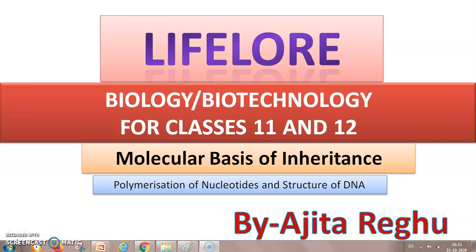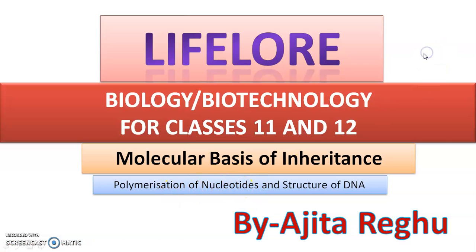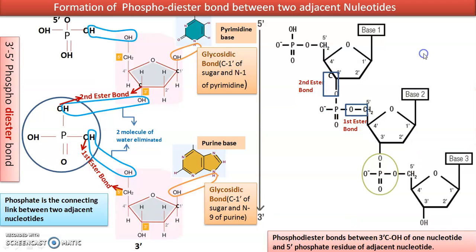Welcome back students. We will continue with nucleic acid. We discussed about the building block of nucleic acid — the nucleotide. Now we discuss how each nucleotide binds to the next one by extending the chain to form a polynucleotide.